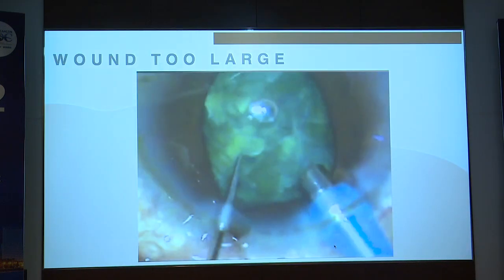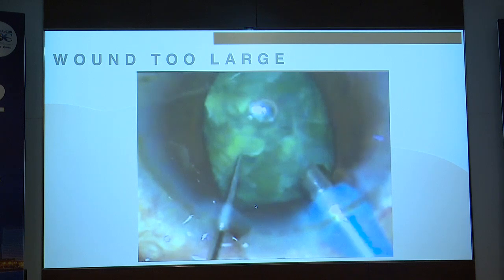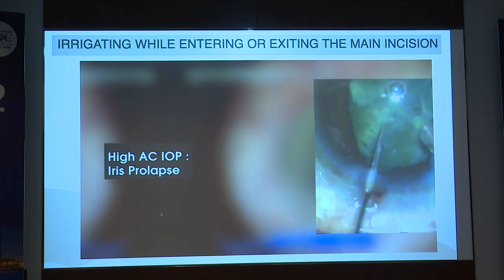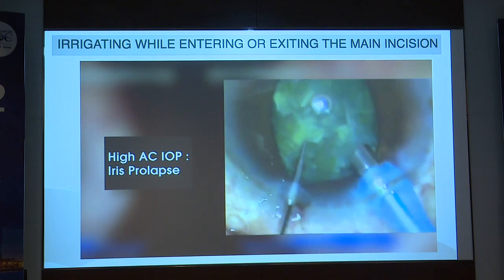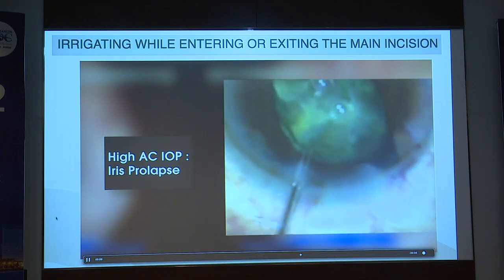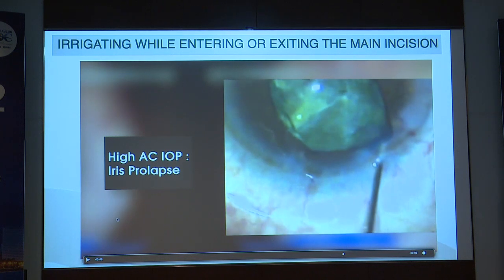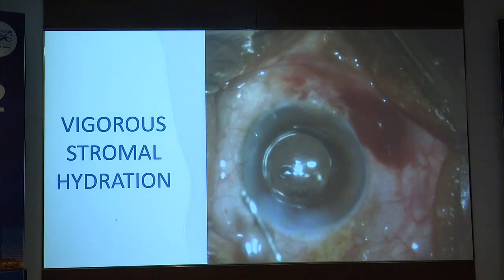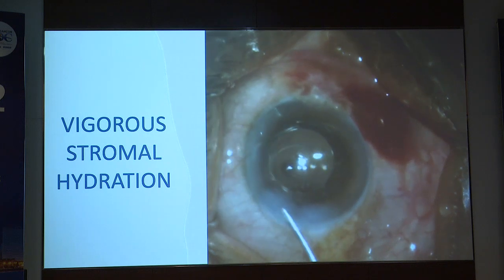When the wound is too large and the side port instrument is smaller than the wound: iris prolapse occurs due to rapid outflow of fluid from the side port incision and high AC pressure. When irrigating while entering or exiting the main incision, iris prolapse can occur from high AC pressure and rapid outflow. When doing stromal hydration, you must be gentle and not vigorous. The irrigation should always be off when entering and exiting the wound. Bi-manual IA is the preferred technique.